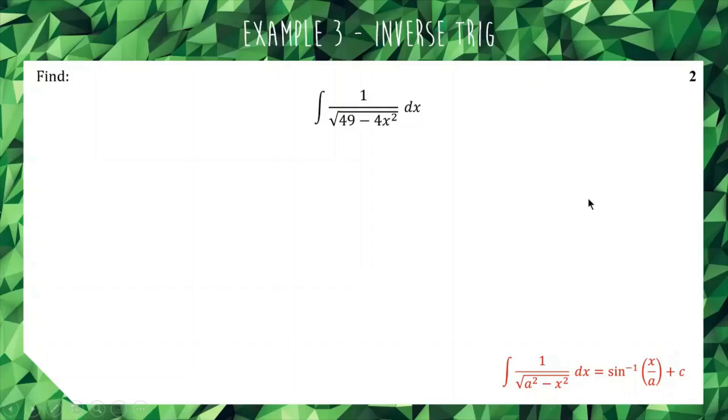The way we made that happen in class is we said, let's just let u equal 2x, because then u² will equal 4x², which means our integral is now going to look like 1 over square root of 49 minus u². We're basically taking the square root of this thing in here, using it as our substitution, and we end up with u² in here, which looks more like what we're used to seeing for our standard integrals.